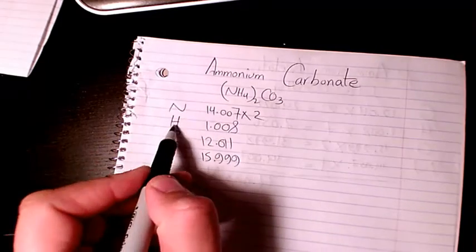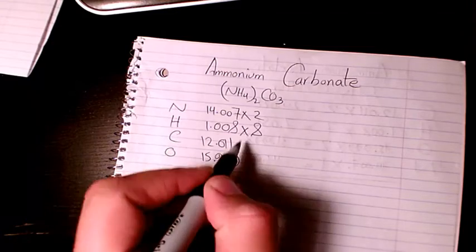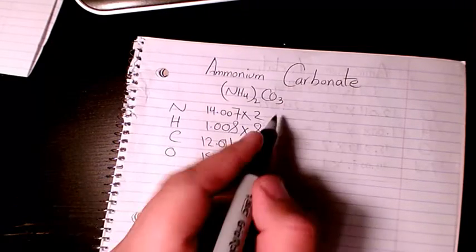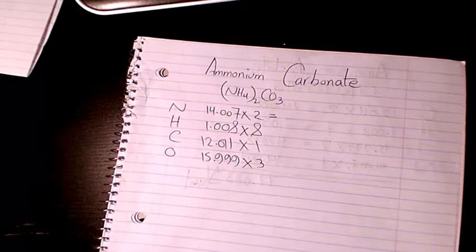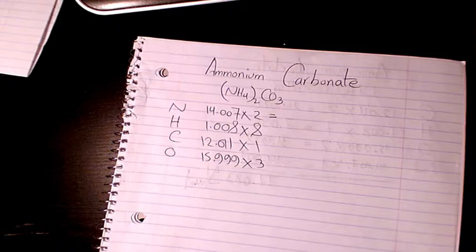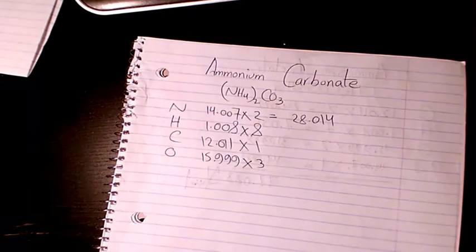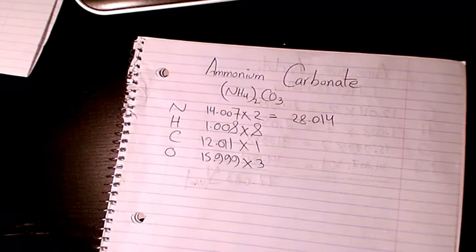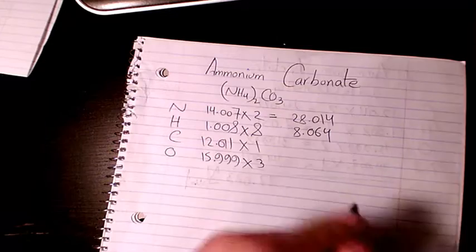So we have 14.007 times 2 is 28.014. 1.008 times 8 is going to be 8.064. This one is going to be 12.011, and here we have three times 15.999 is going to be 47.997.